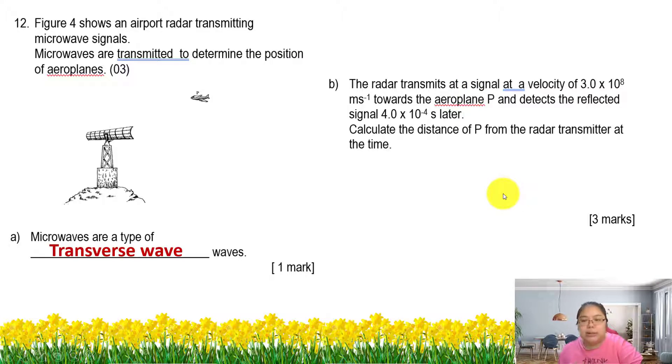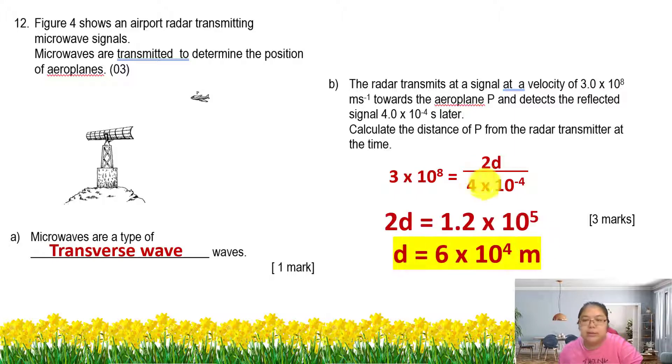The velocity is two-way because they start to send the wave with this velocity. But now the question, they want to count distance P only. That means I don't want two-way distance, just one way. So later your answer, you need to divide by two because all the info here is two-way. I'll show the calculation. Three times ten to the power of eight is V. V equals displacement over time, but now the displacement here is two displacements, so I put 2D over the time. Now I find out what is 2D first: 1.2 times ten to the power of five. But I just want one distance, the distance between P and the radar, so I need to divide by two: six times ten to the power of four.